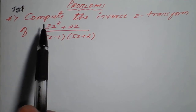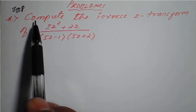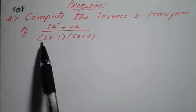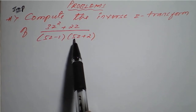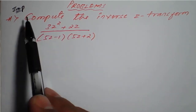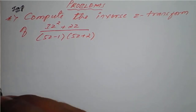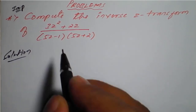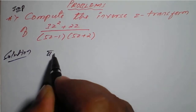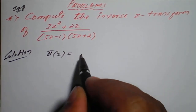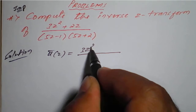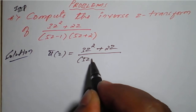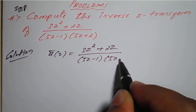Hello students, the problem is to compute the inverse Z-transform of (3z² + 2) divided by (5z - 1)(5z + 2). This question is very important from the examination point of view. The given function of z, we consider as u'(z), is equal to (3z² + 2z) divided by (5z - 1)(5z + 2).